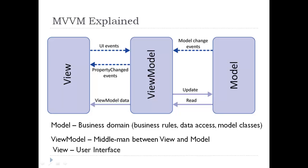The view model exposes not only the models but other properties such as state information and commands. The view handles its own UI events then maps them to the view model via commands. The models and properties on the view model are updated from the view through two-way data binding. The view model may expose the model directly or properties related to the model for data binding, and can contain interfaces to services, configuration data, etc., in order to fetch and manipulate the properties it exposes to the view. Things will get more clear when we start working with examples using Knockout.js.